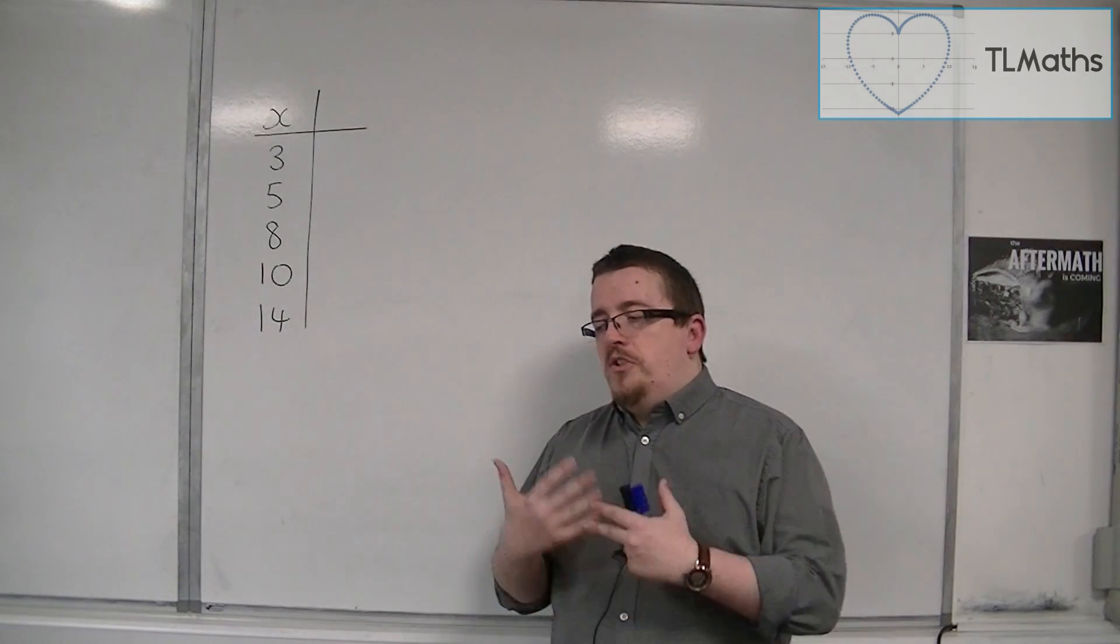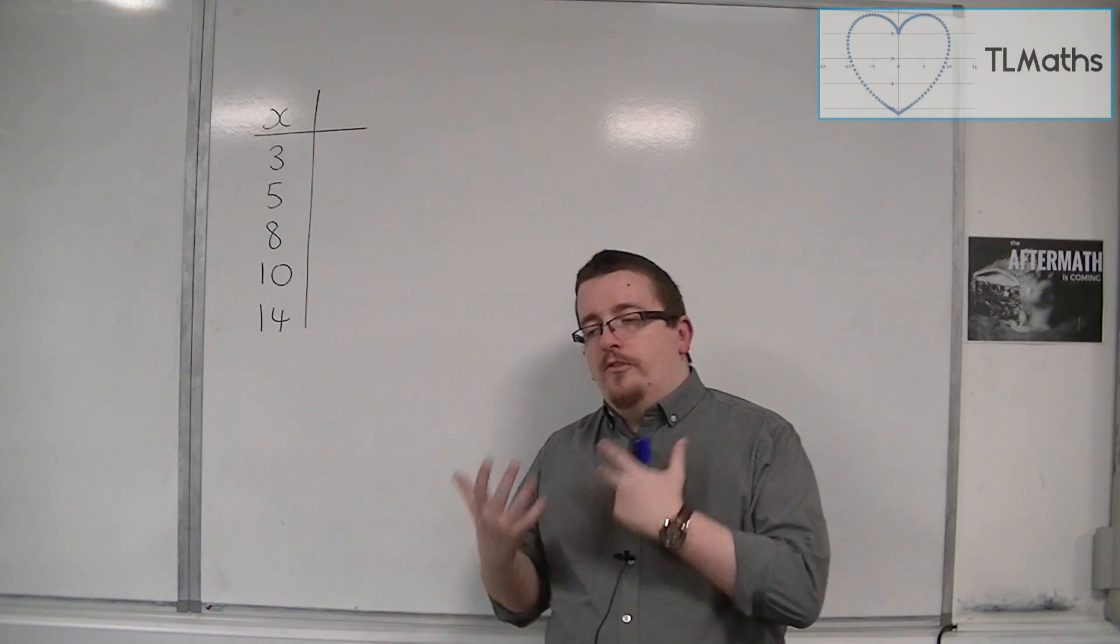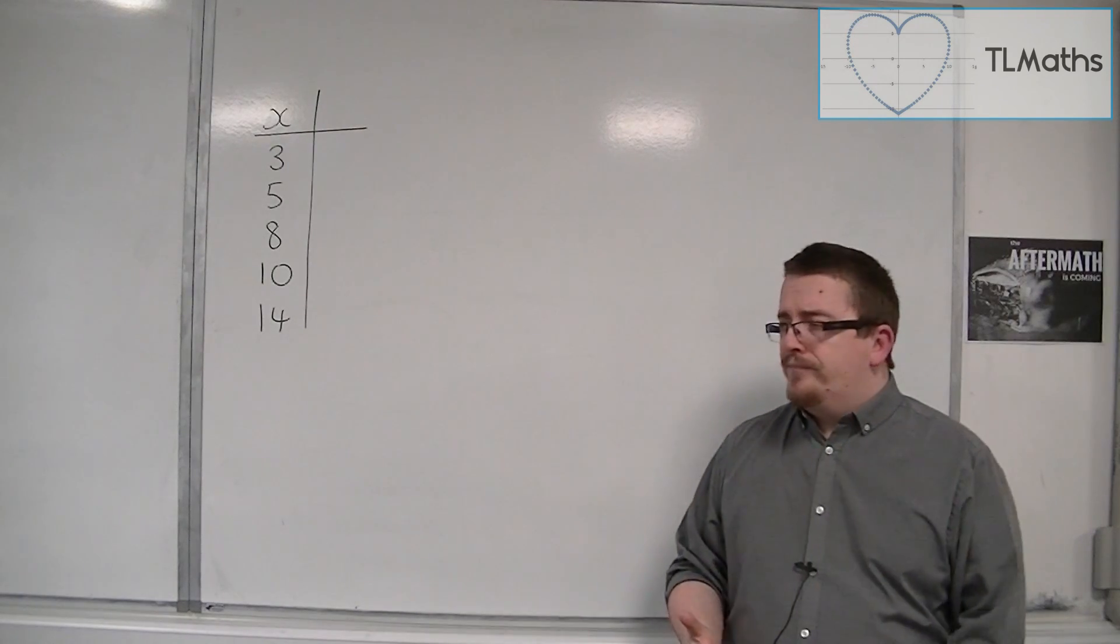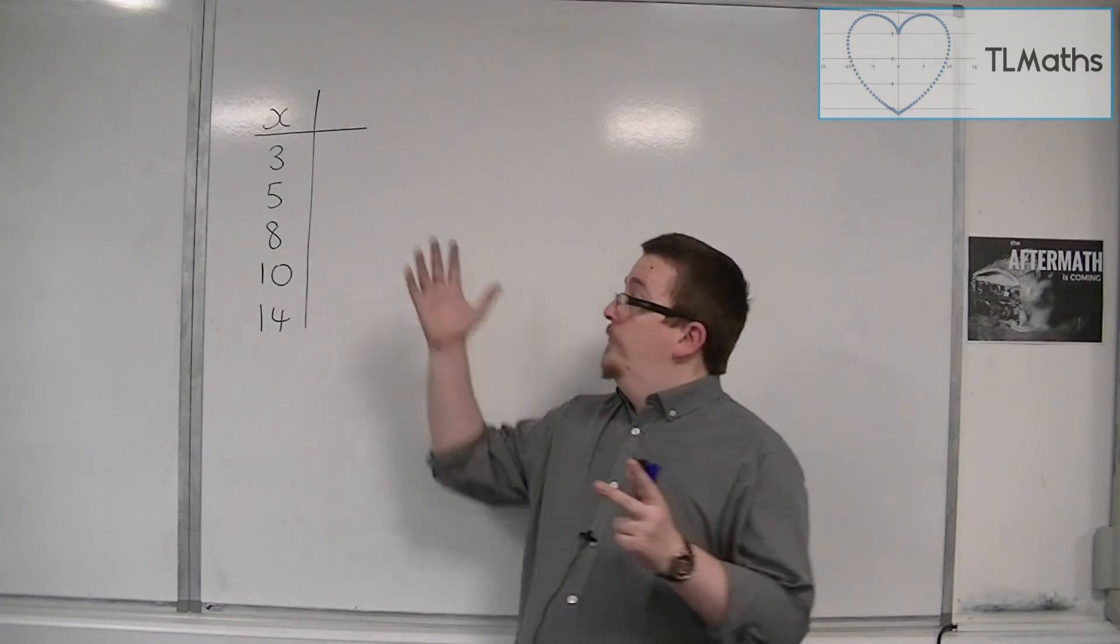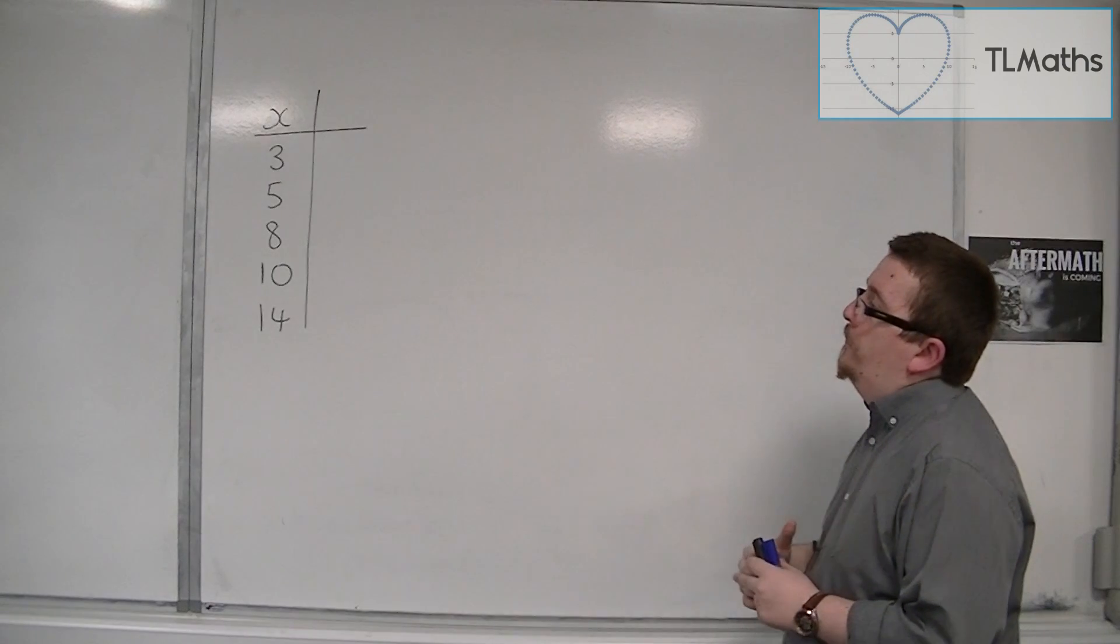In order to get to a way of comparing the data, we need to first look at something known as the sum of the squares. We're going to work with a very basic five-number example: 3, 5, 8, 10, and 14.